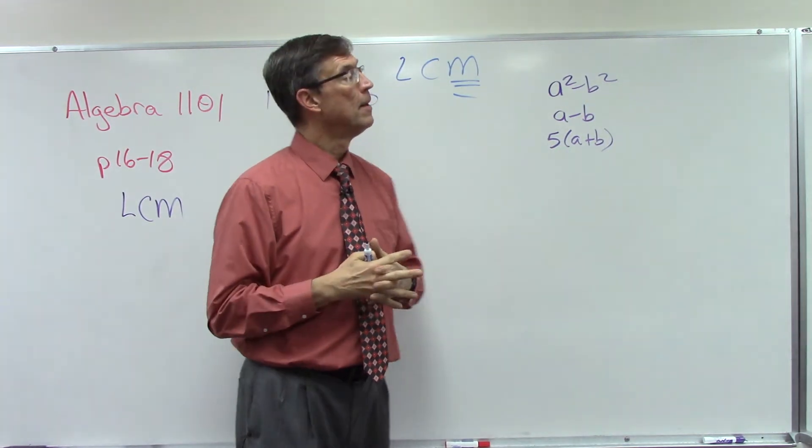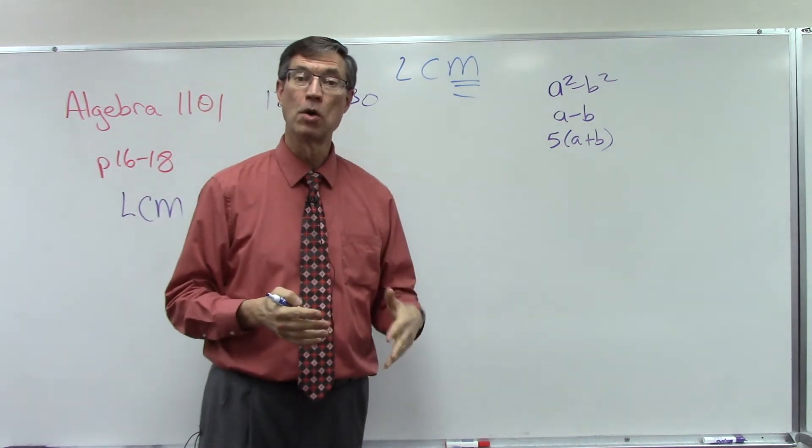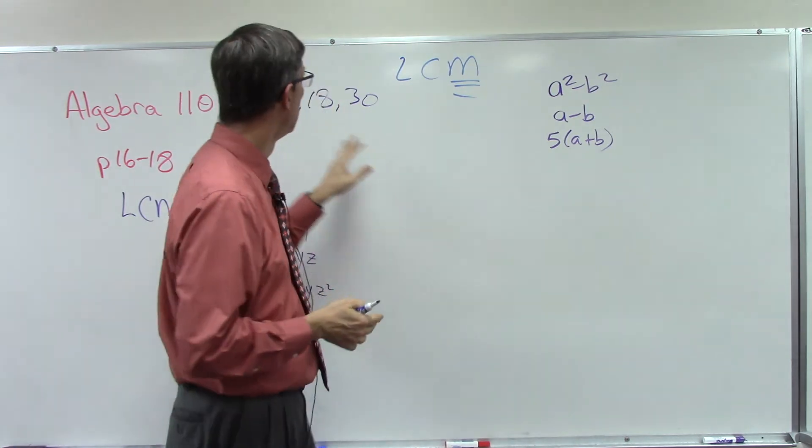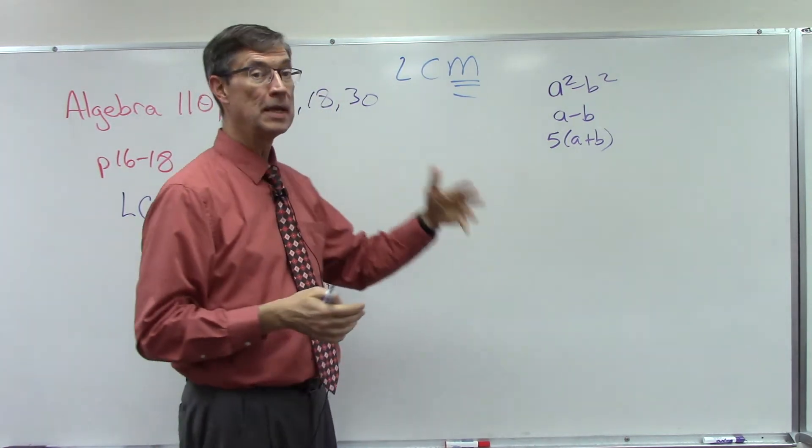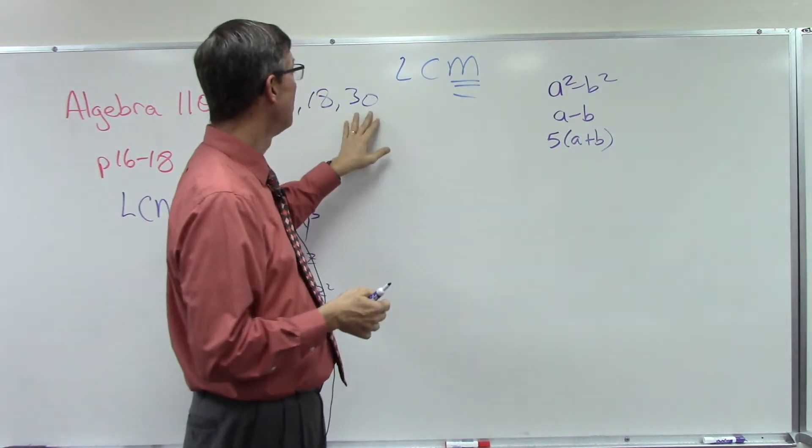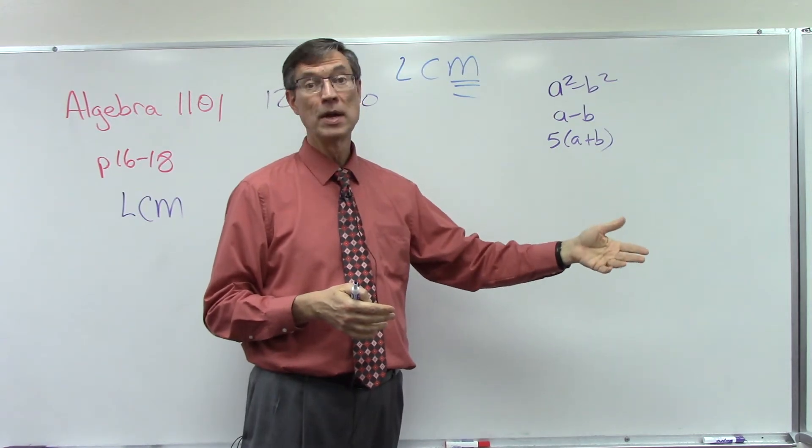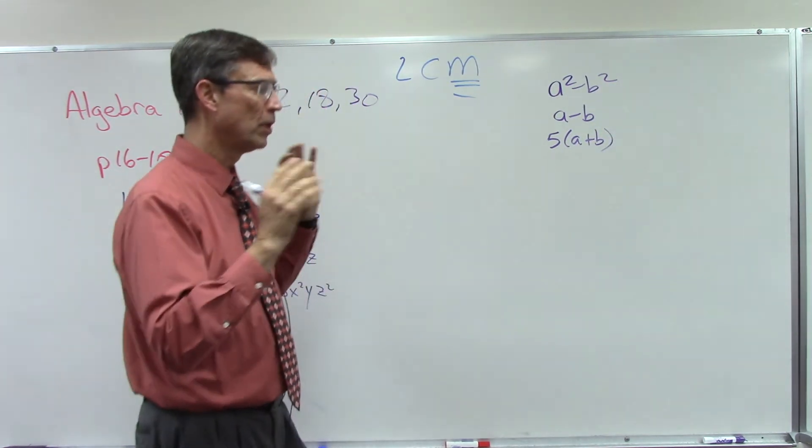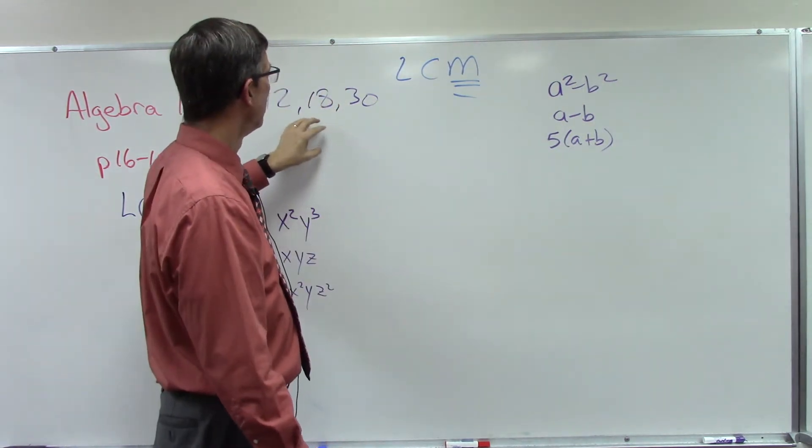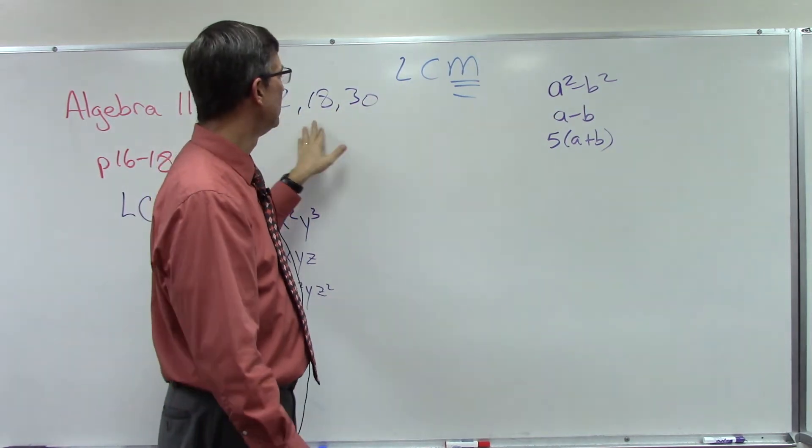So the big numbers. The multiples of 12 would be 12, 24, 36, 48, 60, etc. 18 would be 18, 36. The multiples of 30 would be 30, 60, 90, 120. We're carrying on with all these big numbers and our goal is to find a number way out there that both or all three of these would have in common.